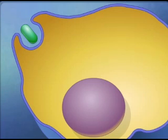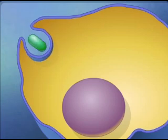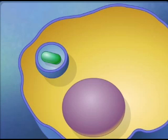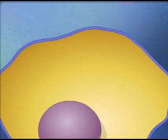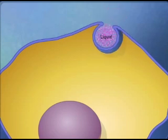If the material the cell takes in is particulate, such as a bacterial cell or an organic fragment, the process is called phagocytosis. If the material is a liquid, it is called pinocytosis.